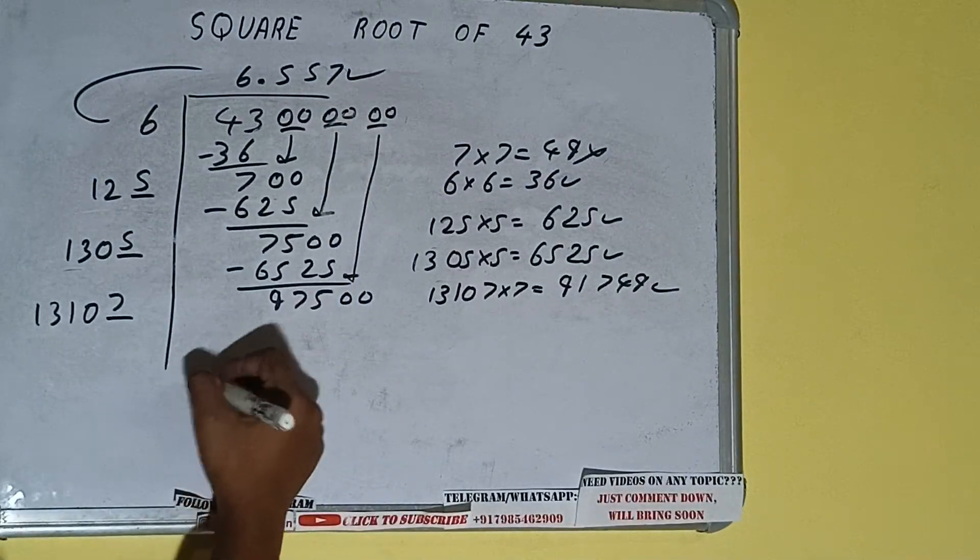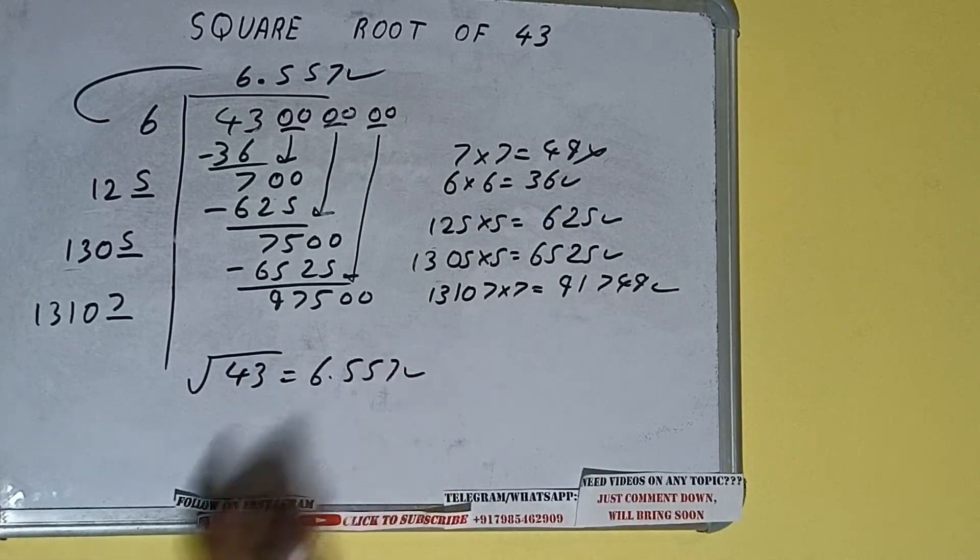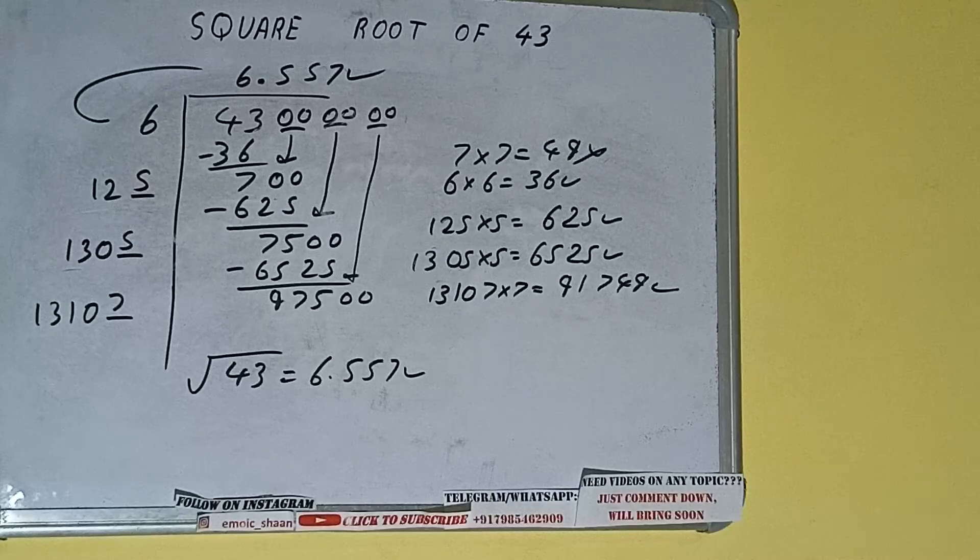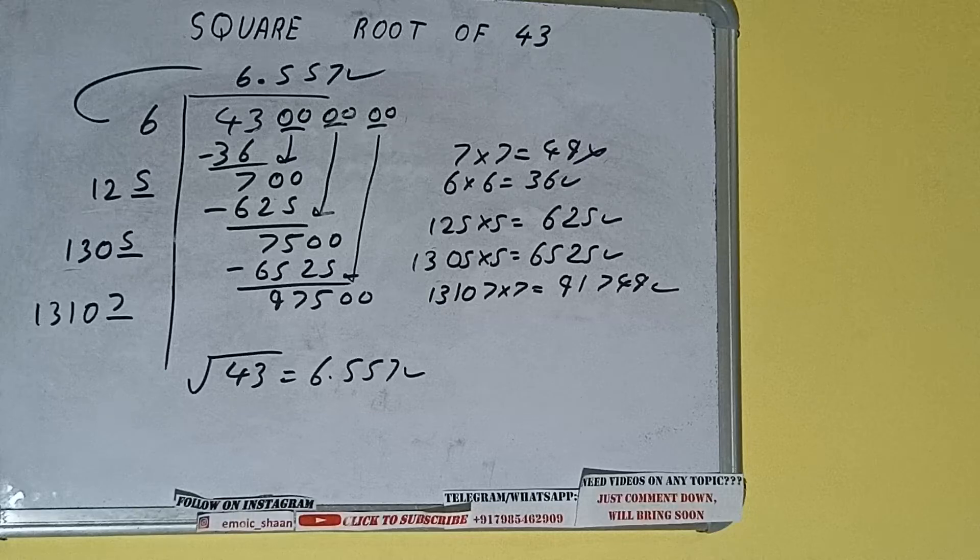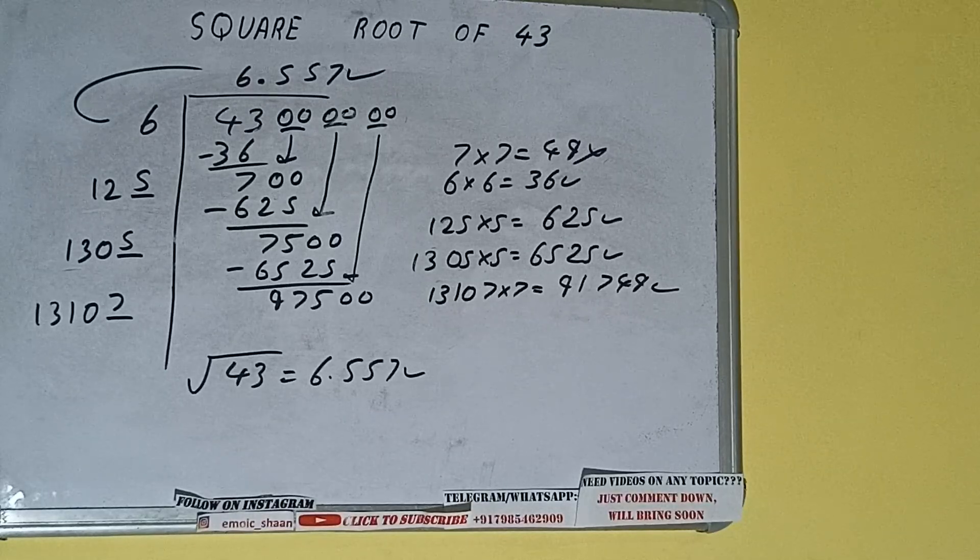So 7 here and 7 here, but we don't need to calculate because we got the answer correct up to 3 decimal places. So square root of 43 will be 6.557. That will be the answer. This is all about square root of 43. If you found the video helpful, please hit the like button, do consider subscribing, and thanks for watching.